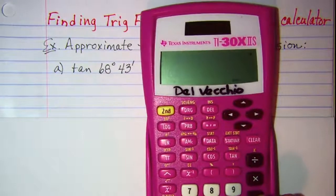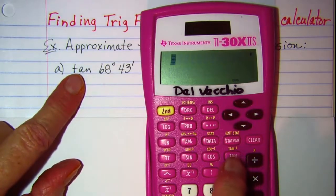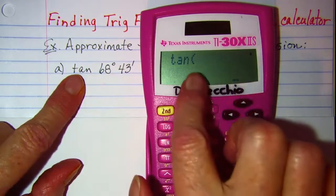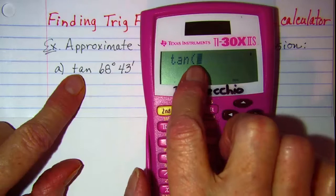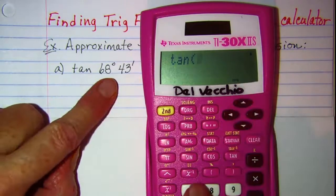For our problem, we want to do tangent, so we'll hit our tangent button. And this calculator automatically opens up the argument. If yours doesn't, you need to open parentheses,